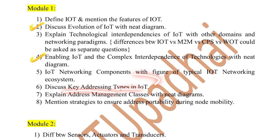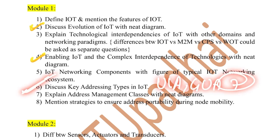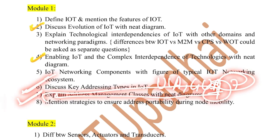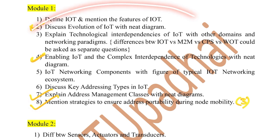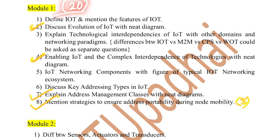Then we have key addressing types — there are seven, including ULA and GUA. Then address management classes: there are seven classes, each with one diagram, so make sure you don't miss this question. Also cover strategies to ensure portability during node mobility — there are three types. The first module is very easy with very limited topics. If you cover these eight questions, you'll be all done with the first module and can easily get 20 marks.